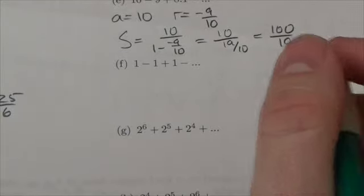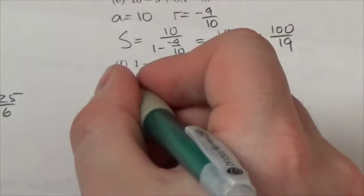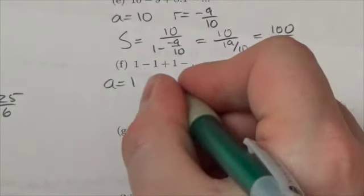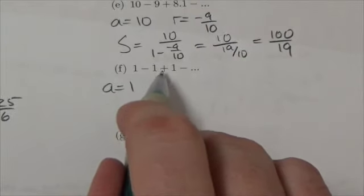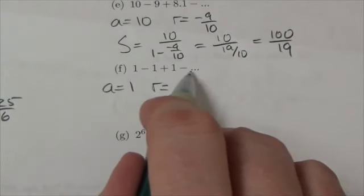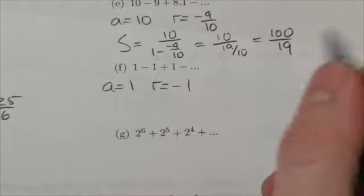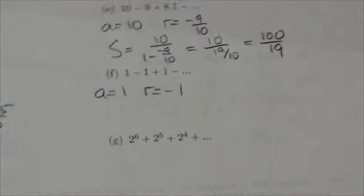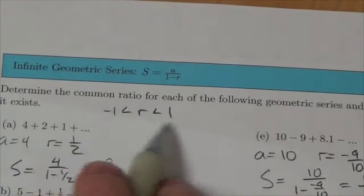We're going to figure out what the r value is and what the sum to infinity is. So the a value here is 1. The r, it should be pretty clear, notice that the value isn't changing, but the sign is. So this is negative 1. Is negative 1 in there, in that region there?